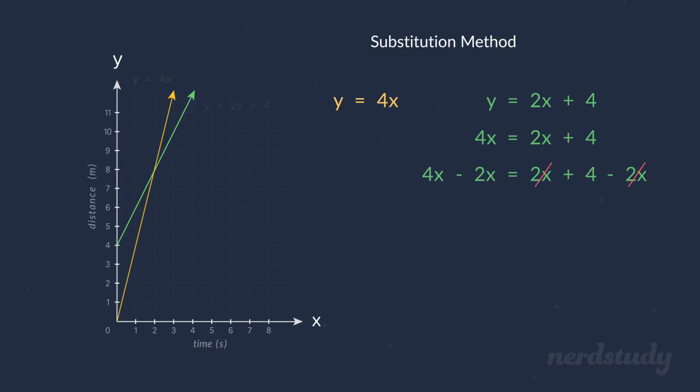If we subtract 2X from both sides, we get 2X equals 4. And if we divide by 2 on both sides, we get X equals 2. Is that a correct solution?